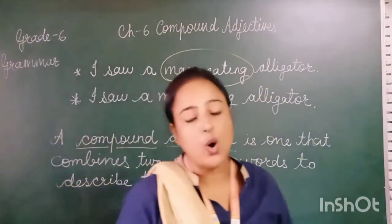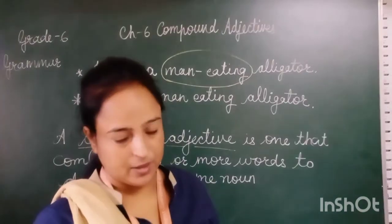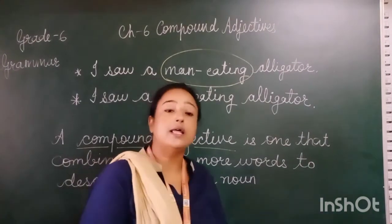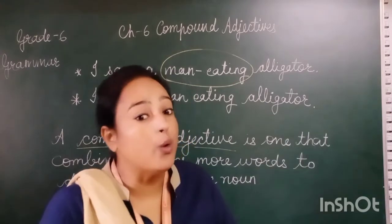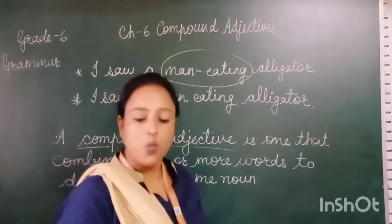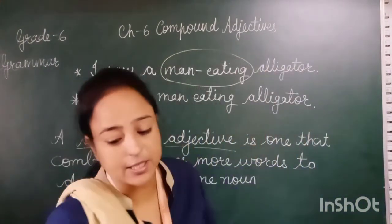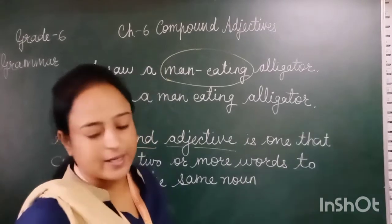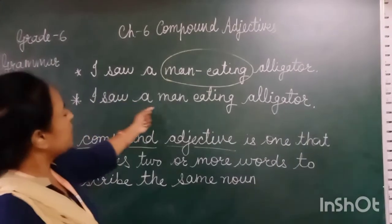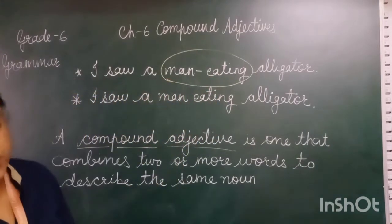A compound adjective combines two or more words to describe the same noun. Whenever you use compound adjectives, your English looks more attractive — it is a magical element. People will immediately think your English is very fantastic. Now look at the second sentence: 'I saw a man eating alligator.' What is the difference between these two sentences?